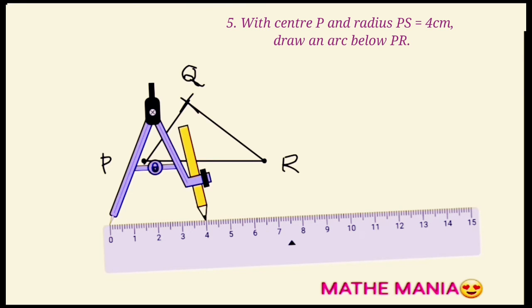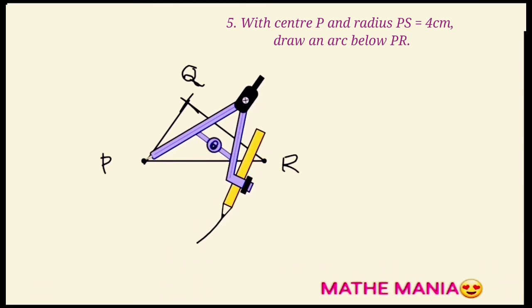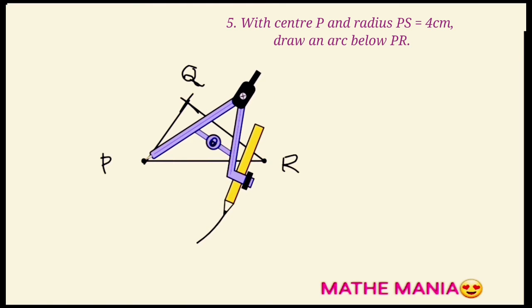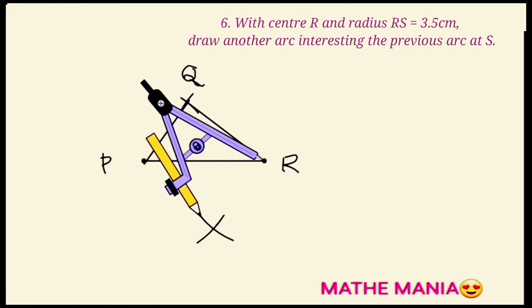Taking 4 cm as radius and center at P, draw an arc below PR. Next, with center R and radius 3.5 cm, draw another arc intersecting the previous arc.